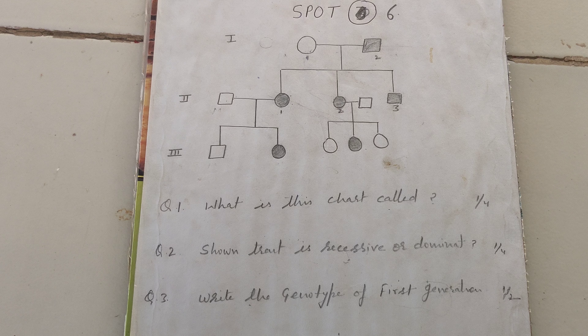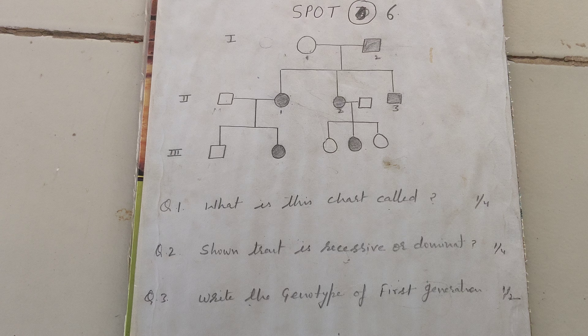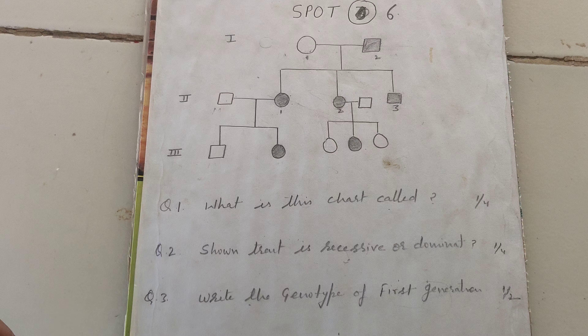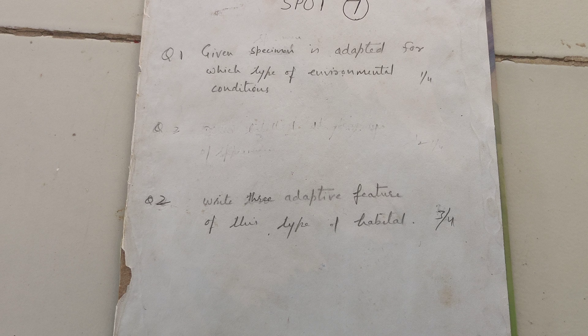We are skipping the fifth one. In the sixth spot, you will observe a chart — this chart is a pedigree analysis. You have to answer: first, identify the chart; second, determine whether the trait shown is recessive or dominant; and third, write the genotype of the first generation. So these are the questions you will get from this specimen.